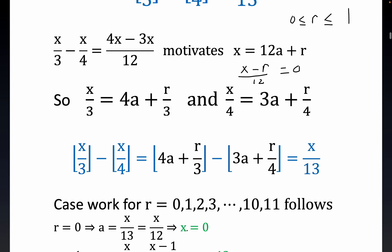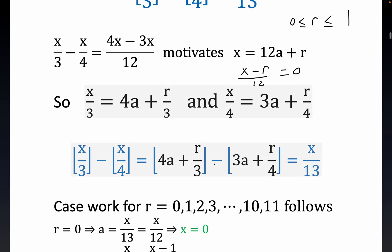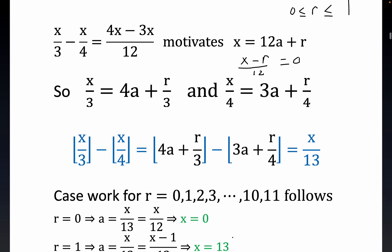So for r equals zero, you can see very quickly here this part would be zero, this part would be zero. You would have the floor of an integer minus the floor of another integer, but those integers are 4a and 3a, respectively. So 4a minus 3a is the a that you see right here, and of course, the only way this can happen, if r is zero, you get x over 12, so the only way this can happen is if x is equal to zero, which you could have seen by inspection at the beginning of the problem.